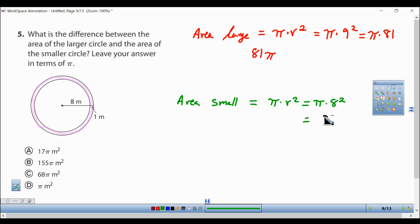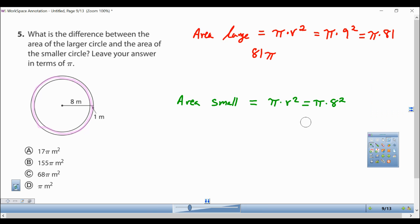So now we know that the area of this circle is going to be 64 pi, because 8 times 8 gives me 64.